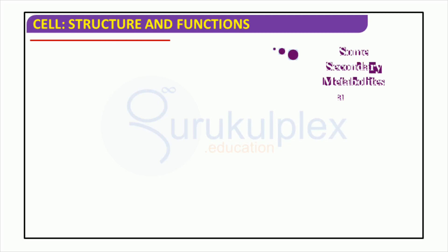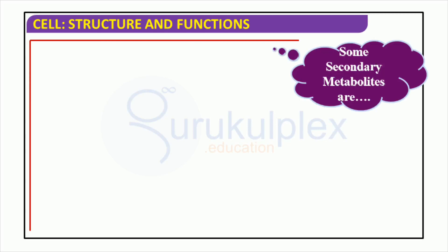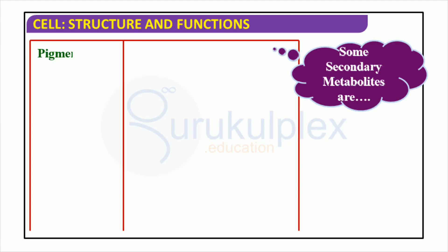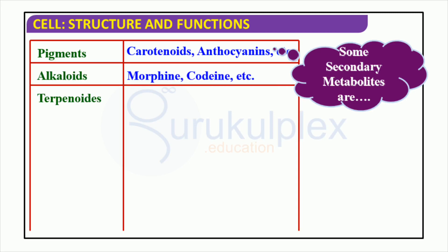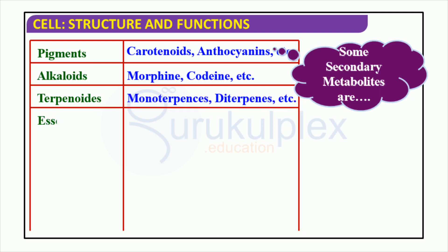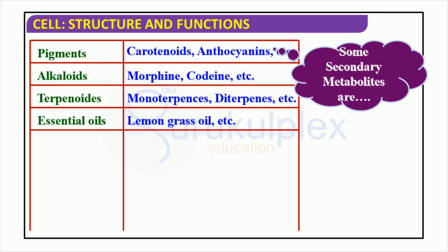Today's biochemistry lesson dives into the captivating world of biochemically active molecules, also recognized as secondary metabolites. These molecules can be categorized into various groups, comprising of pigments, alkaloids, terpenoids, essential oils, toxins, lectins, drugs, carotenoids, and anthocyanins.